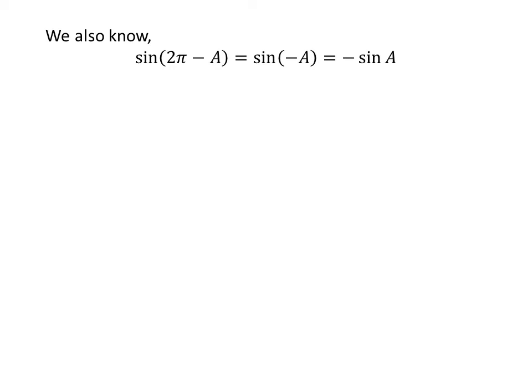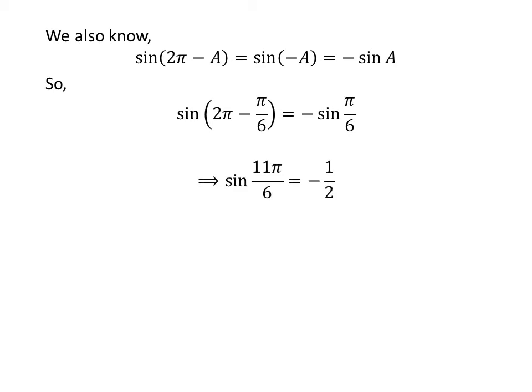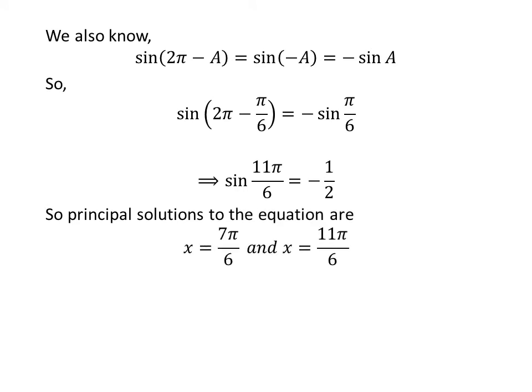We know the value of sine of x repeats after the interval of 2 times pi, so sine of 2 times pi minus a is equal to sine of minus a. We also know the trigonometry identity sine of minus a is equal to minus sine of a. Applying this identity, we get sine of 11 times pi upon 6 is equal to minus half. So the principal solutions to the equation sine of x equal to minus half are 7 times pi upon 6 and 11 times pi upon 6.